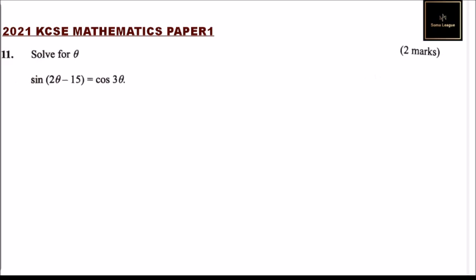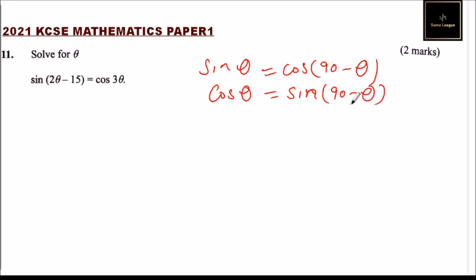When you are given sine θ, it equals cos(90 - θ). Alternatively, if you are given cos θ, it equals sine(90 - θ). So when you have that, what we do is we now convert this.